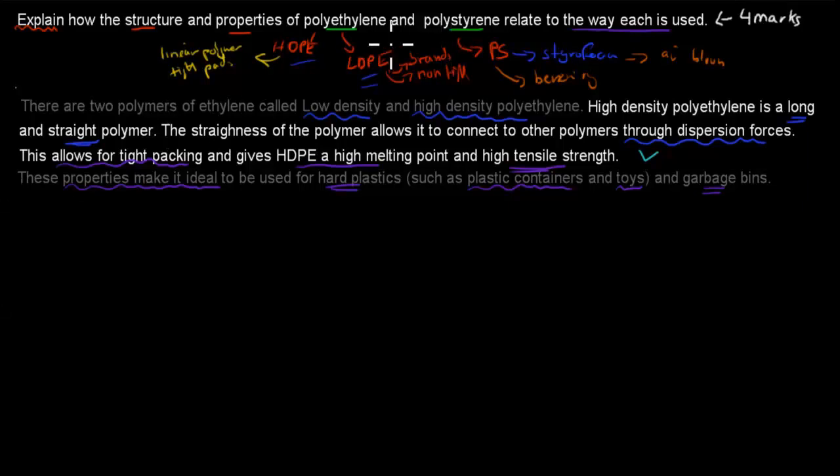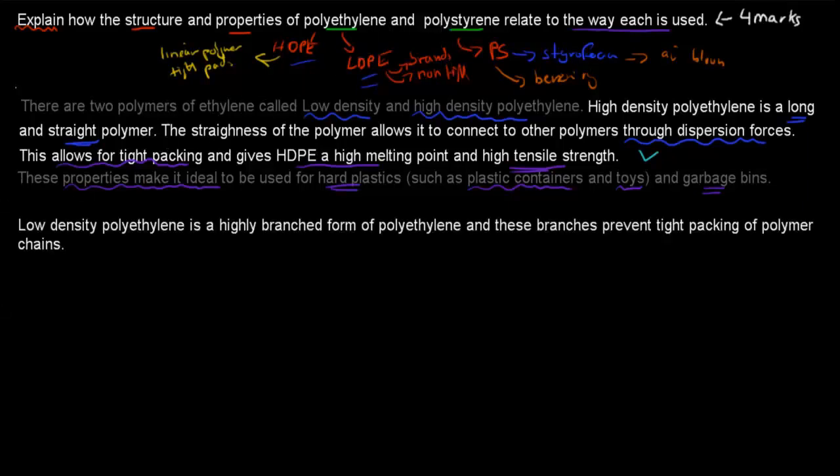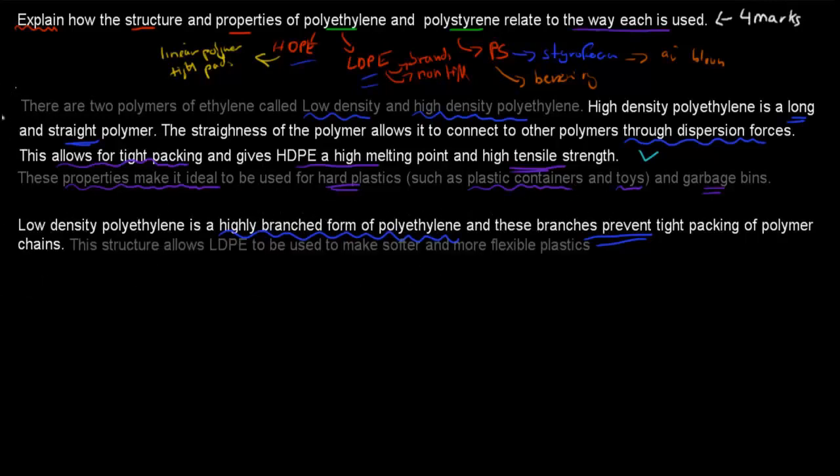Now we'll talk about low-density polyethylene. Low-density polyethylene is a highly branched form of polyethylene, whereas high-density was straight and linear. These branches prevent tight packing of polymer chains. This structure allows low-density polyethylene to be used to make softer and more flexible plastics because of that low density. It just means they have lower melting points and a softer plastic.